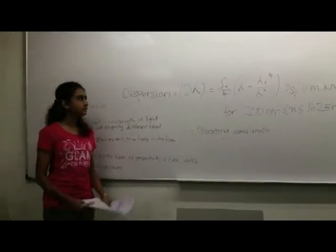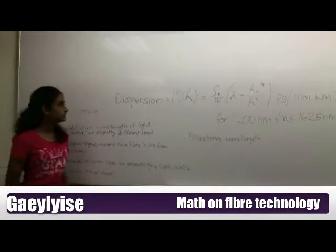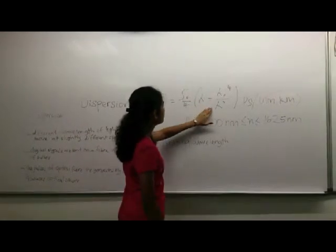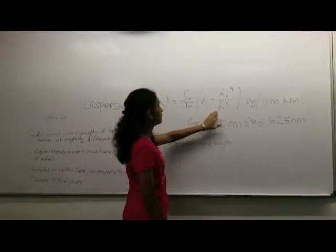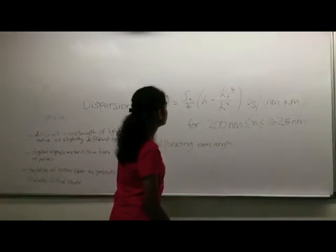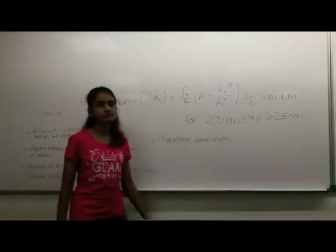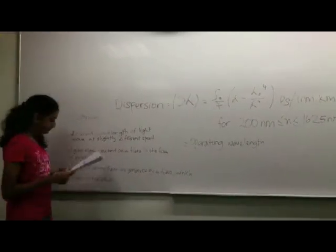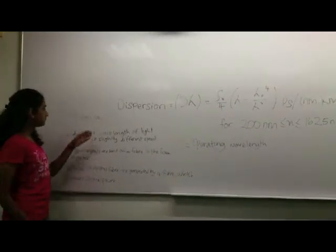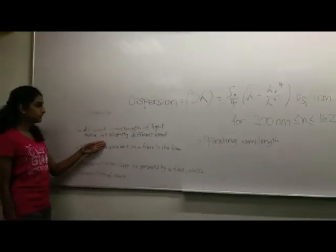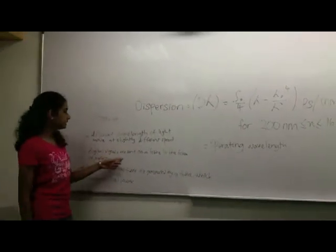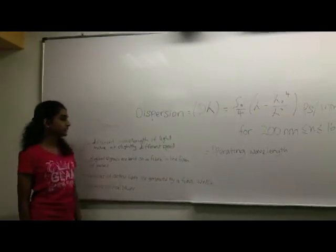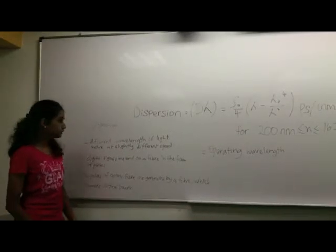We are explaining about the optical fiber dispersion formula. Dispersion equals S0 over 4 multiplied by lambda minus lambda zero to the power of four, divided by lambda cubed, for the range between 1200 nanometer and 1685 nanometer. Lambda equals the operating wavelength. Here's a quick description about dispersions: different wavelengths of fiber travel at slightly different speeds. Digital signals are sent on a fiber in the form of pulses. The pulses of optical fiber are generated by the fiber which produce optical power.